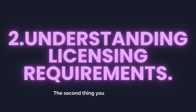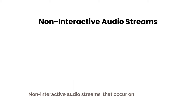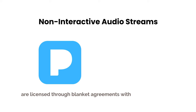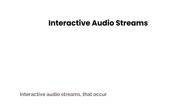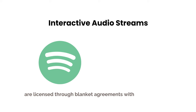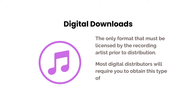The second thing you need to know is understanding licensing requirements. Non-interactive audio streams that occur on internet radio platforms like Pandora are licensed through blanket agreements with performing rights organizations. Interactive audio streams that occur on platforms like Spotify and Apple Music are licensed through blanket agreements with the mechanical licensing collective. So that leaves digital downloads as the only format that must be licensed by the recording artist prior to distribution, and most digital distributors will require you to obtain this type of mechanical license before using their services.